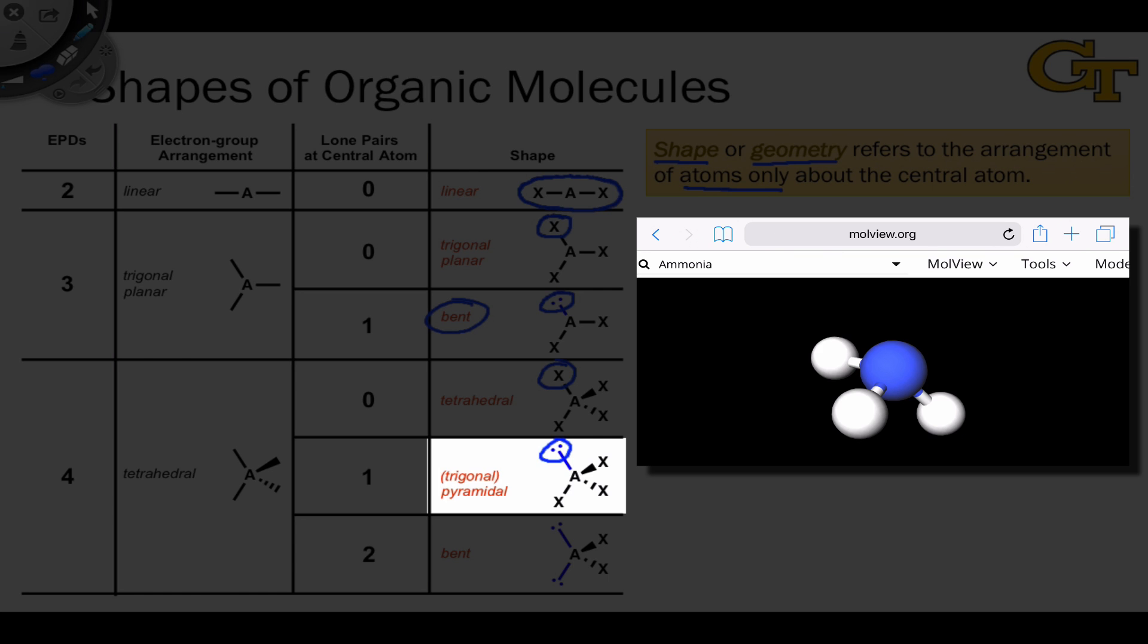We have four electron pair domains total, but only three bonds to atoms. So the geometry manifests itself as a trigonal pyramid, with the nitrogen at the top of the pyramid and the hydrogens forming a triangle at the base. The bond angle is still approximately 109.5 degrees, but the molecular geometry is trigonal pyramidal, while the electronic arrangement is tetrahedral.